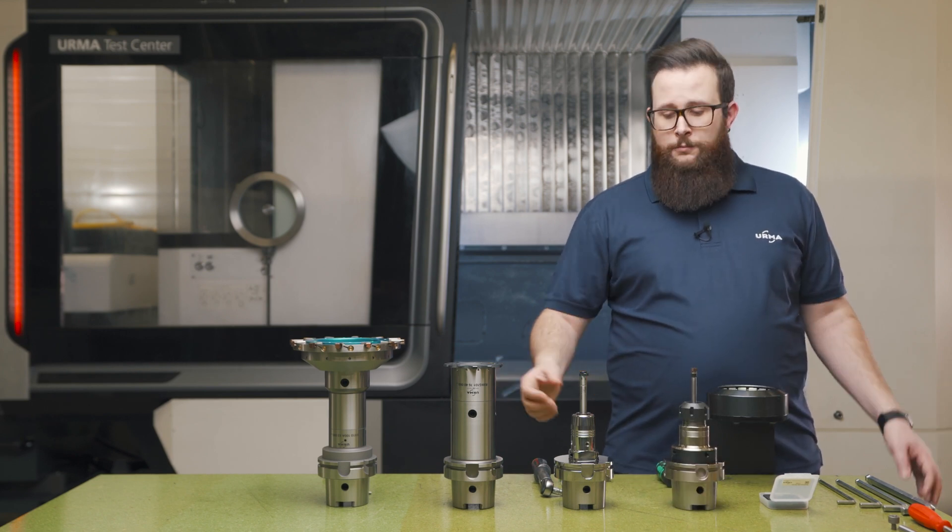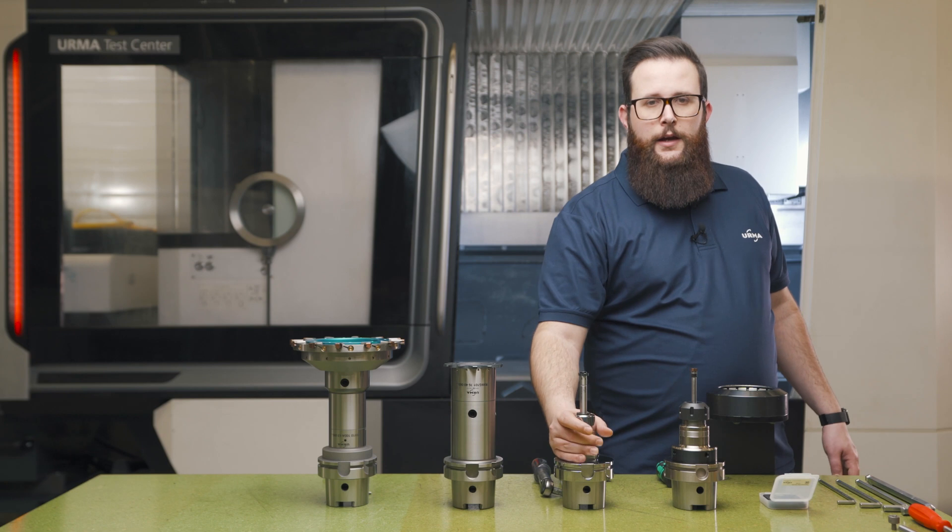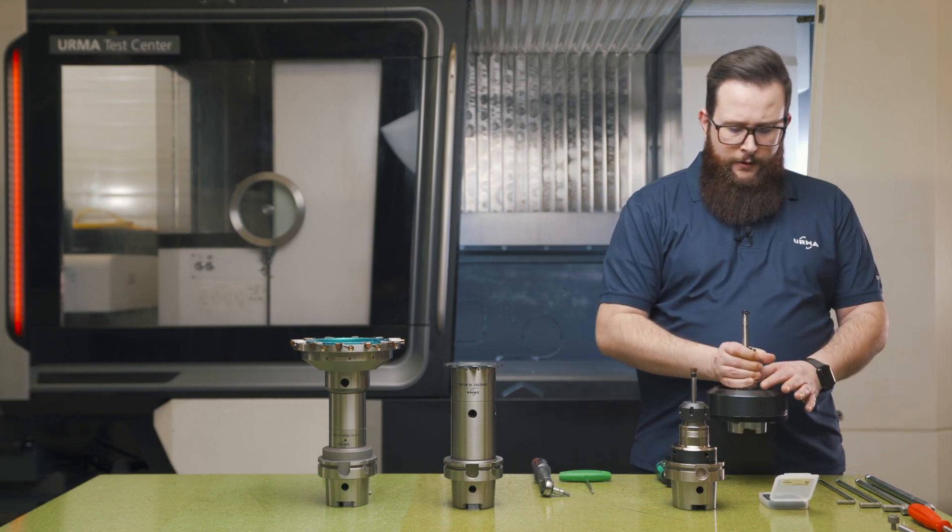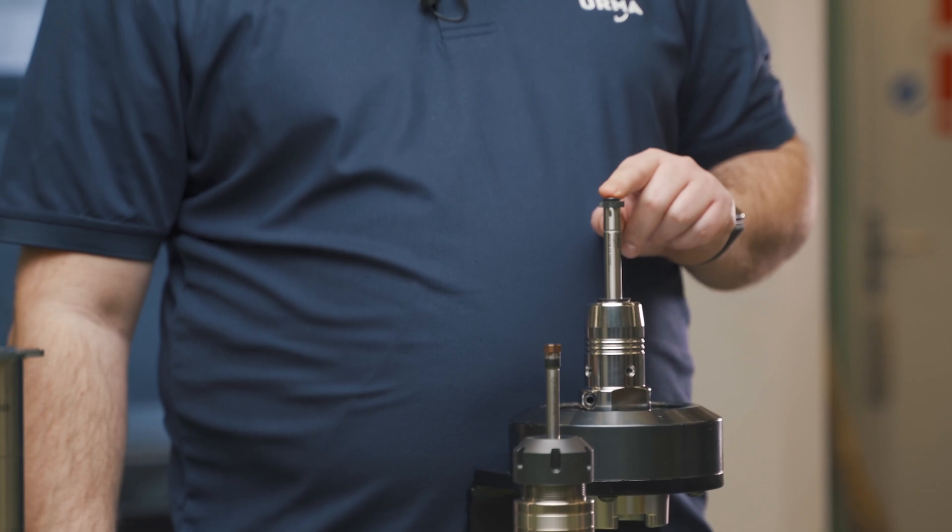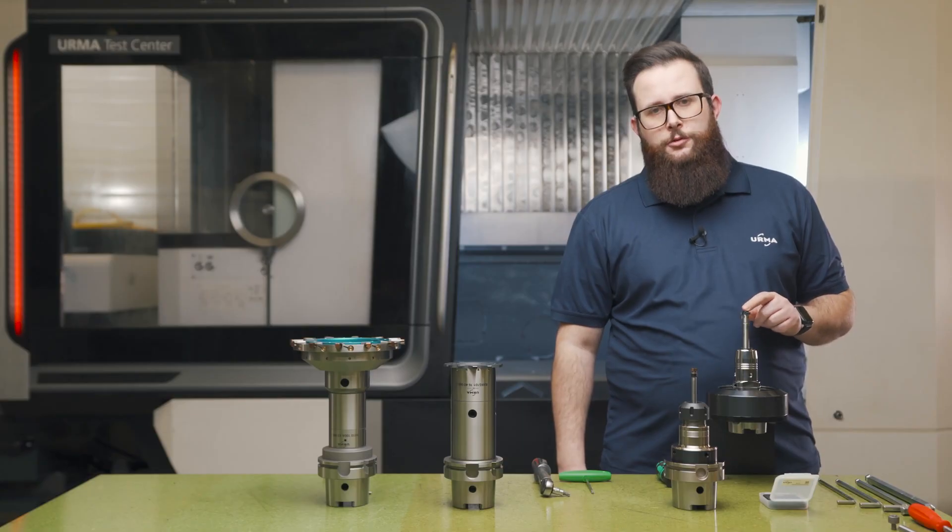So on the RX medium, on the cylindrical shanks, it is the same deal. Here you can see an SD version. The SD stands for central clamping screw.